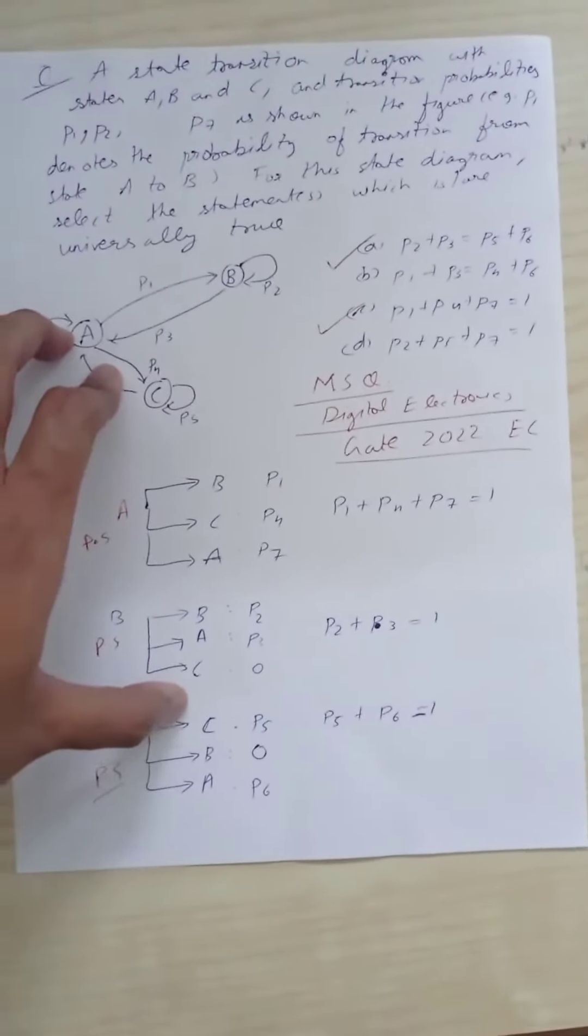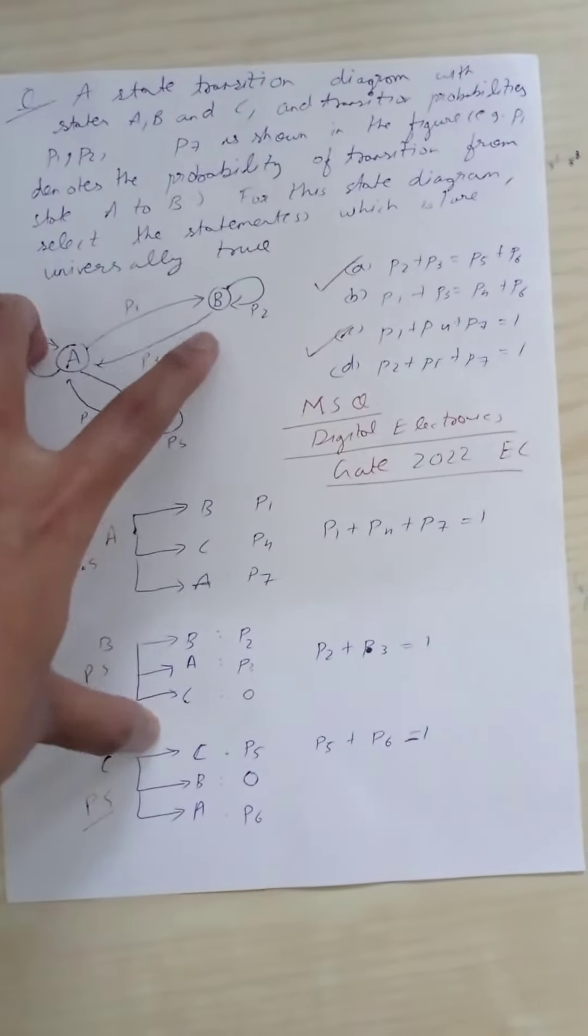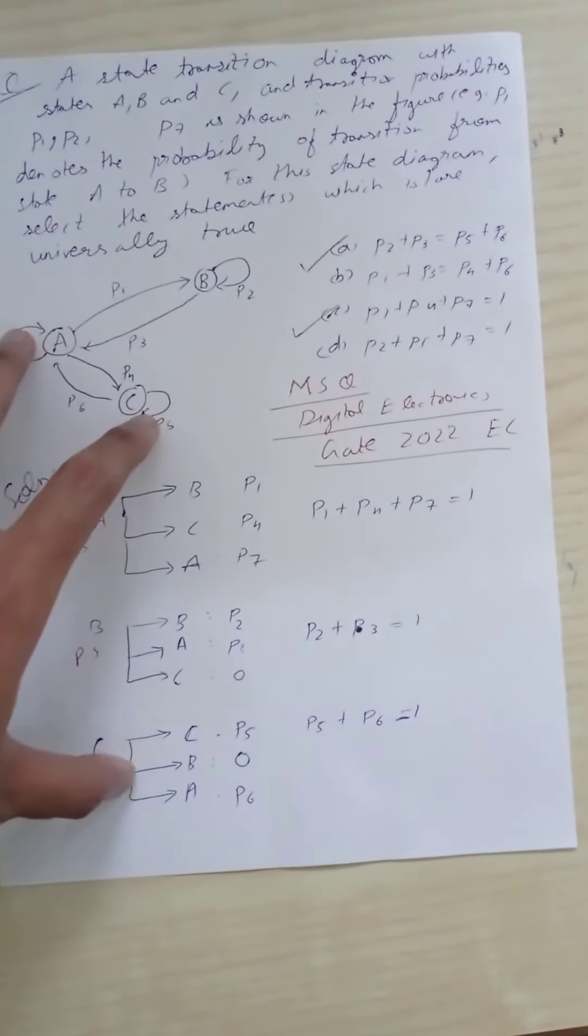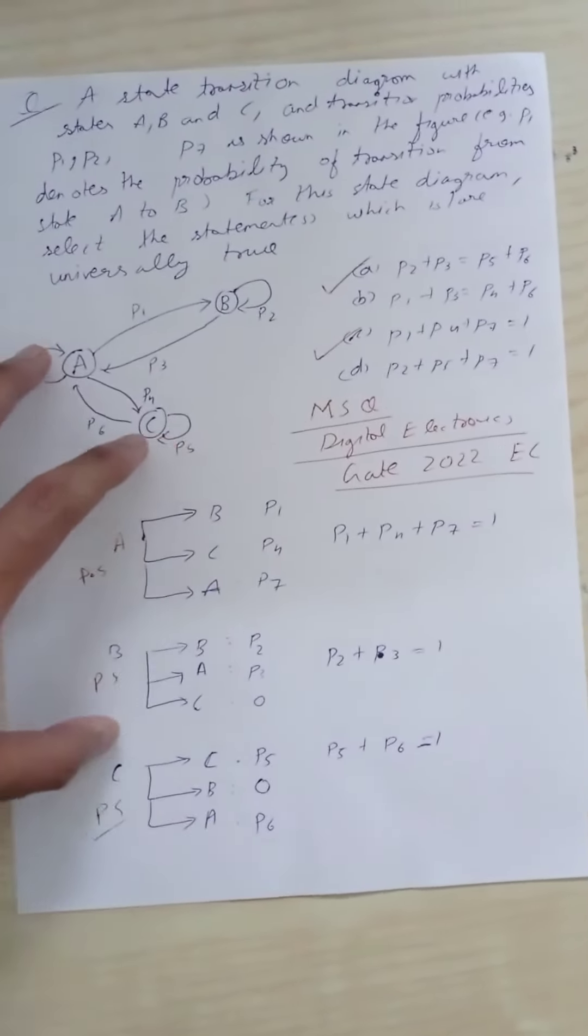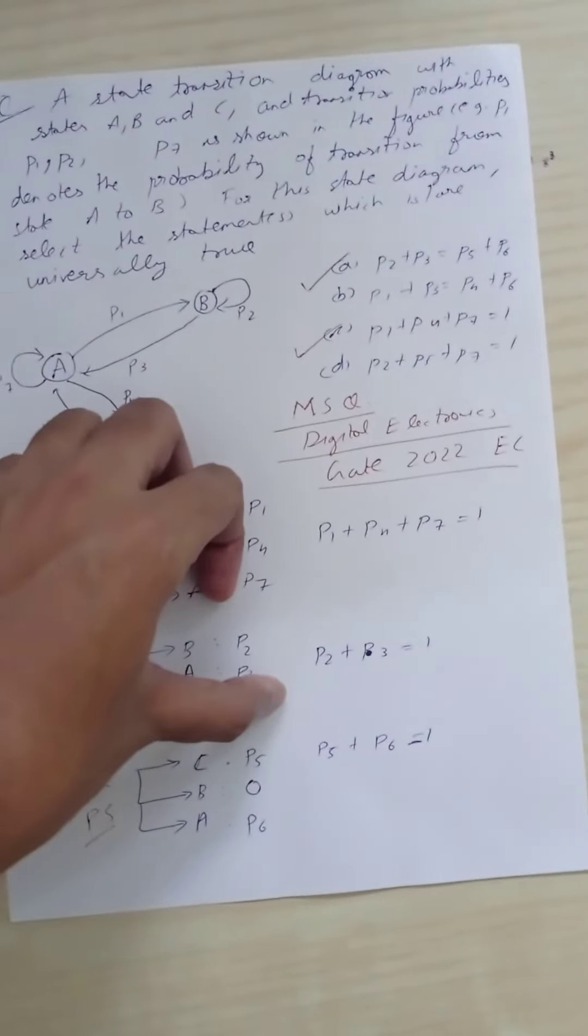For state C, the transition to state C is P5. To state B there is no transition because from state C to state B there is no arrow. From state C to state A the probability is P6. So P5 + P6 = 1.